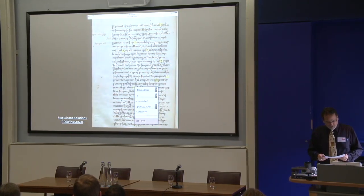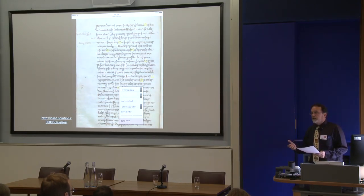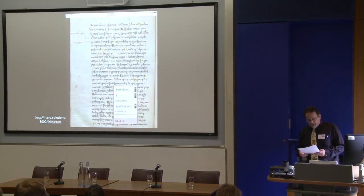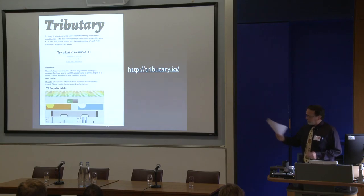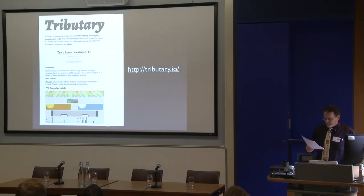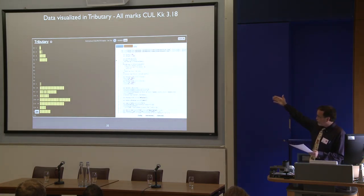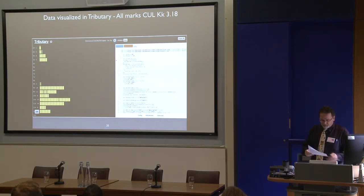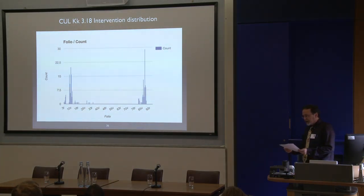I recently used this tool to plot the interventions of Tremulous in CULKK318 as well, which is one of the Old English Bede Historia manuscripts. My son then ran the data through a JavaScript real-time visualization platform that he built called Tributary. Here's a partial view of the data visualized in Tributary, showing the intervention count per folio and the actual punctuation marks on the left. I then used the data to produce a simple bar graph showing the distribution of interventions over the entire manuscript, and as you can see, Tremulous was particularly — almost exclusively — interested in specific passages in the text.